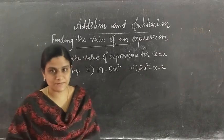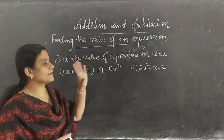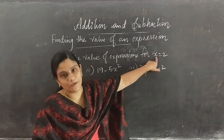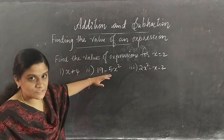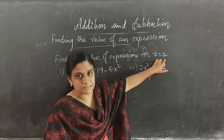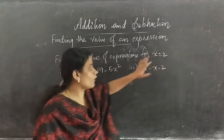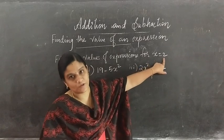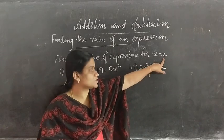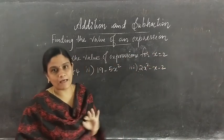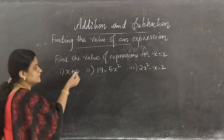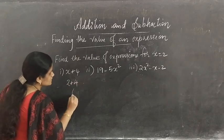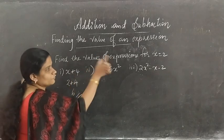Moving to the next topic: Finding the value of an expression. You have to find the value of the expression for the given value of the variable. Here, find the value for x equal to 2 — we substitute 2 in place of x. For x plus 4: 2 plus 4 gives 6. So 6 is the value of this expression for x equal to 2.